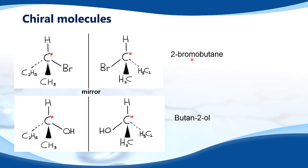At the top we have 2-bromobutane; the chiral carbon is indicated using the red asterisk and these molecules are drawn in 3D. The thick wedge means the CH3 group is coming out of the plane of the paper or screen, straight lines mean it's in the same plane, and the dotted line means it's going into the plane. There are two enantiomers — mirror images of each other. At the bottom we have butan-2-ol; the chiral carbon is indicated with the red asterisk, attached to four different groups, and again we have the two enantiomers.